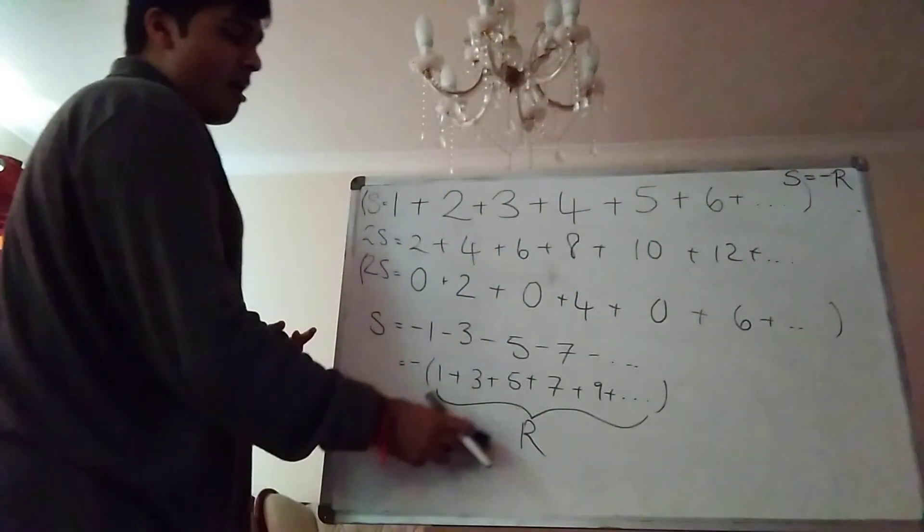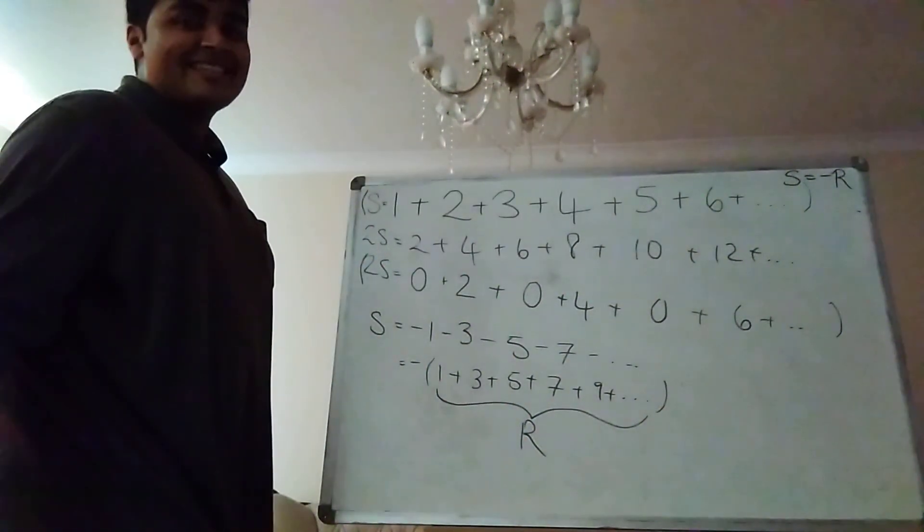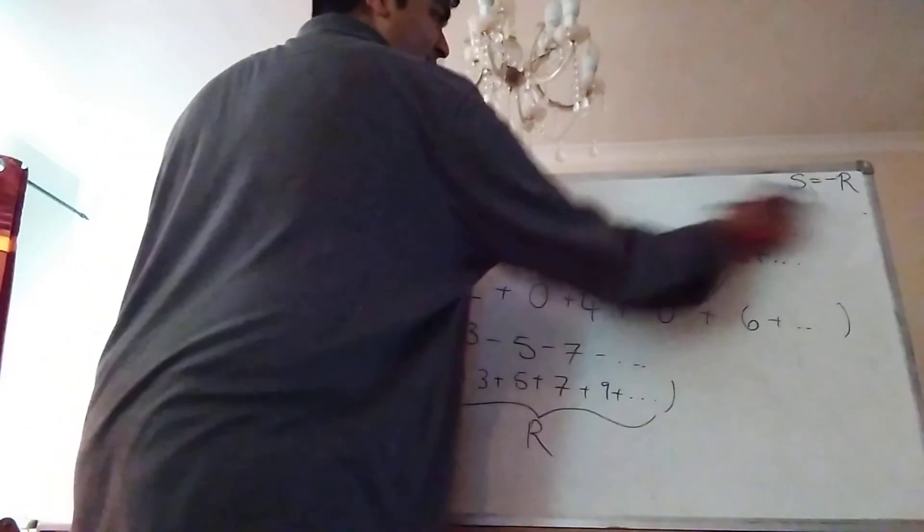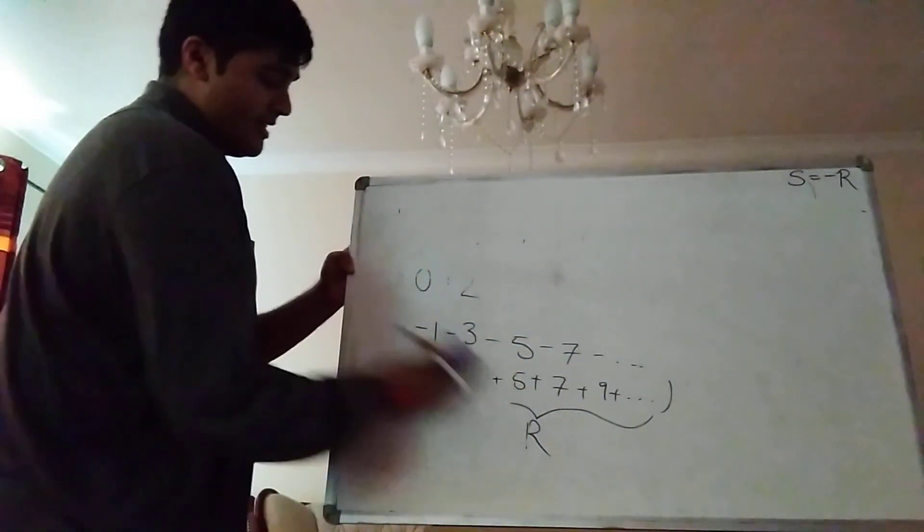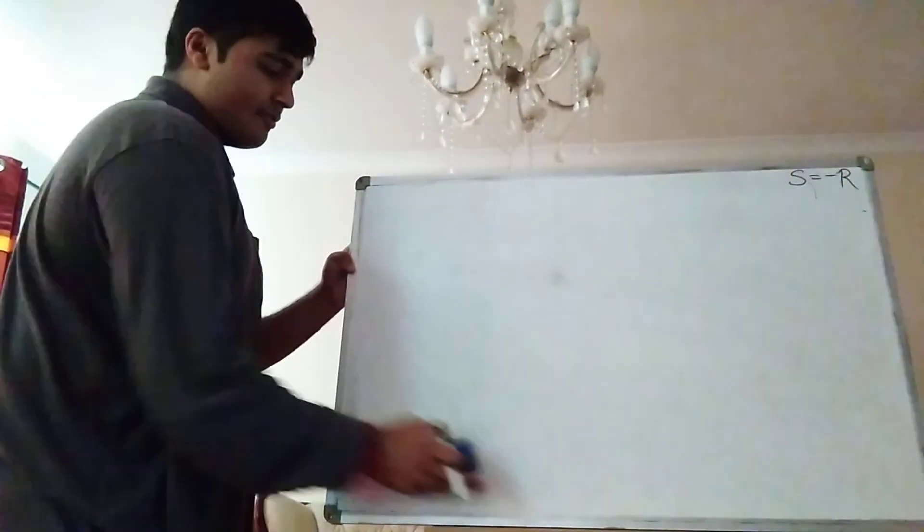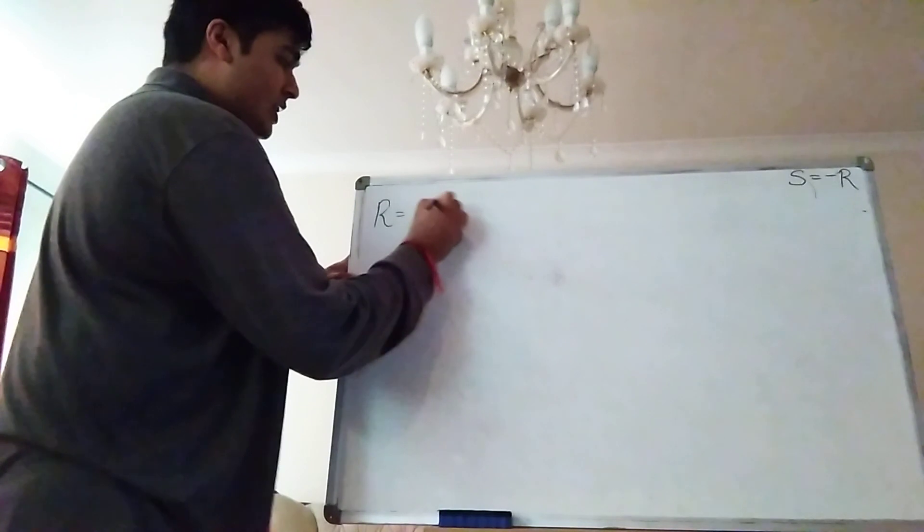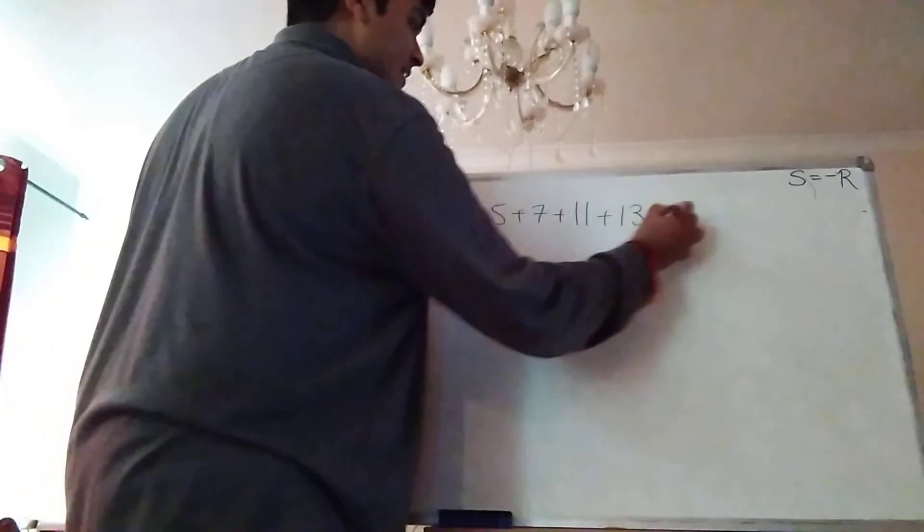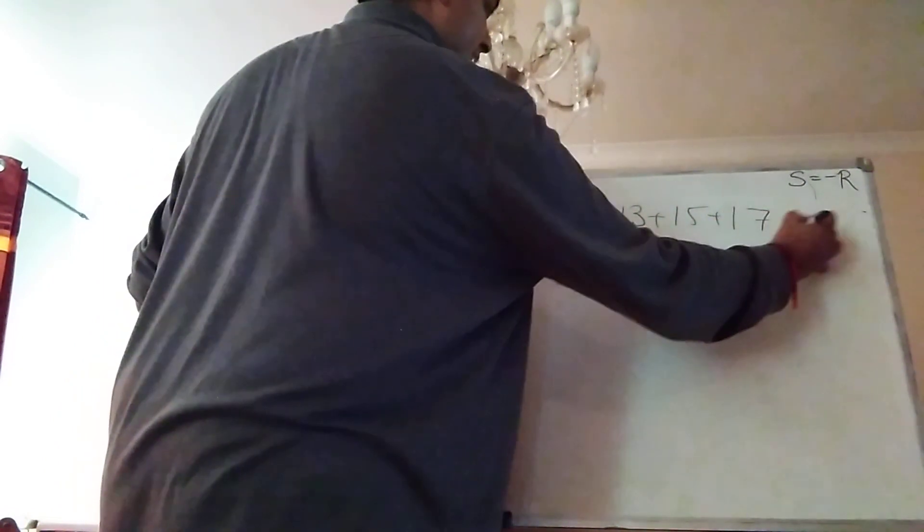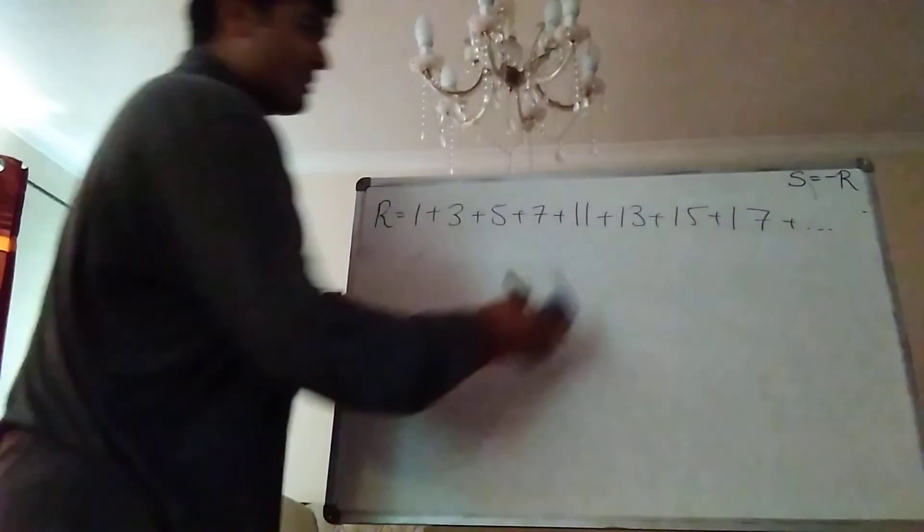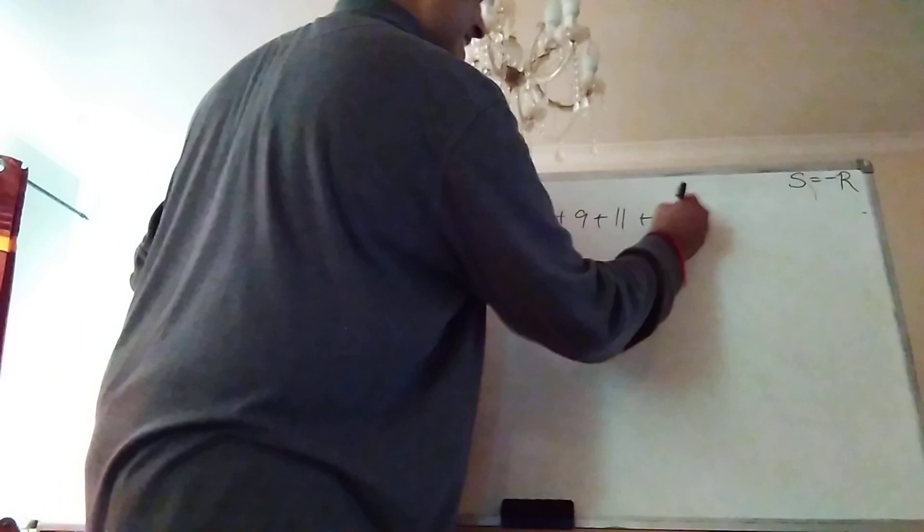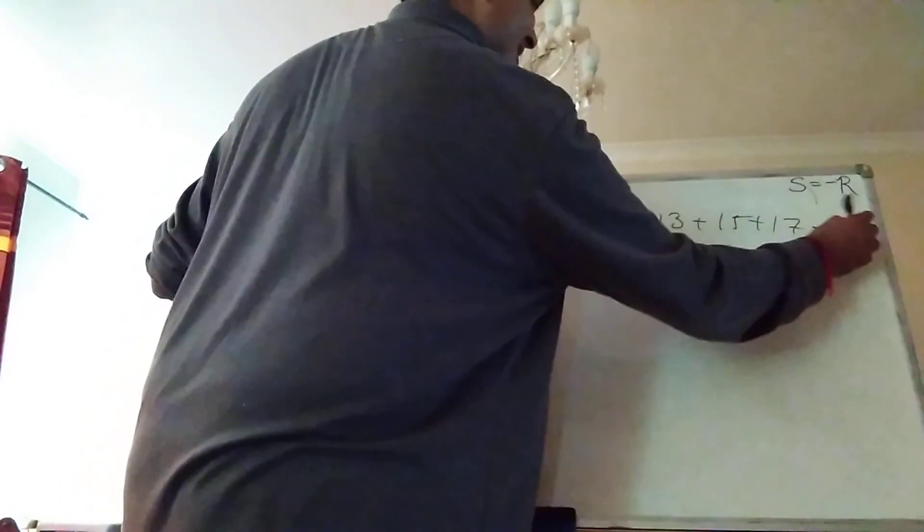So now if we can work out what R is. Then we can work out directly what S is by just putting a minus sign in front of whatever R is. So our task now is to work out or evaluate R. So let me just write out what R is again. It's the sum of the positive odd integers. So 1 plus 3 plus 5 plus 7 plus 9 plus 11 plus 13 plus 15 plus 17 and so on.